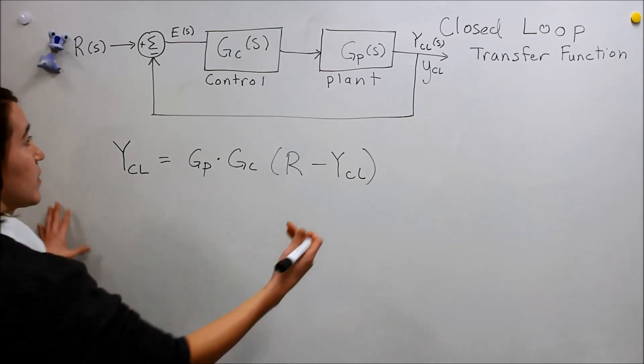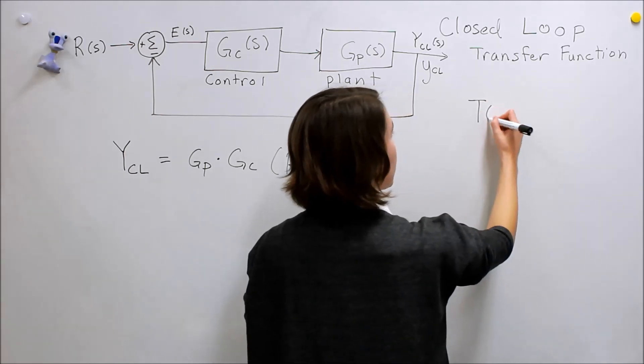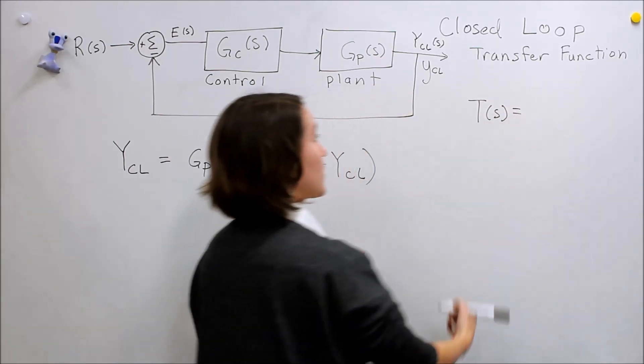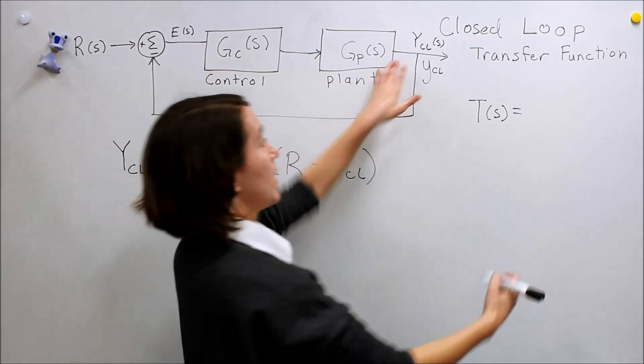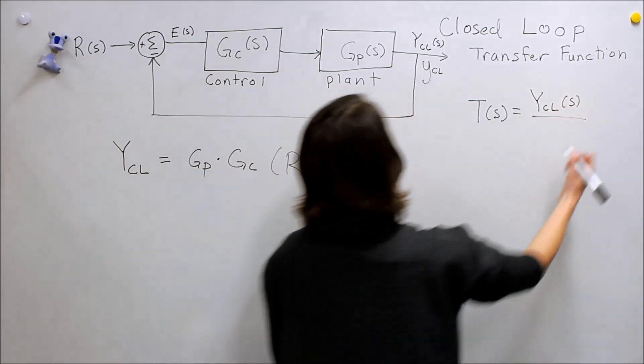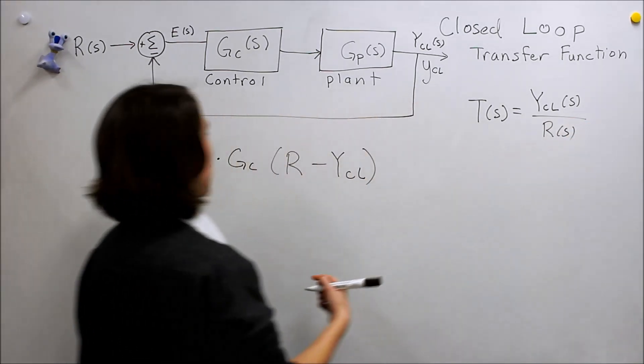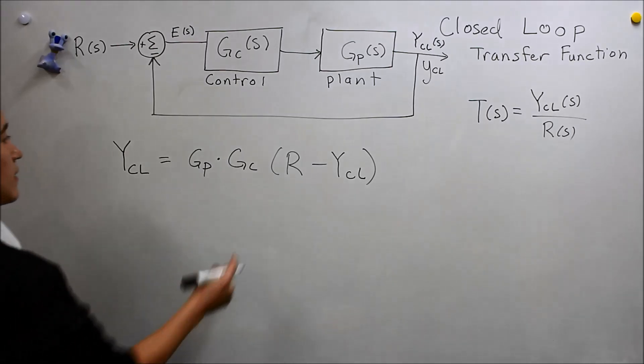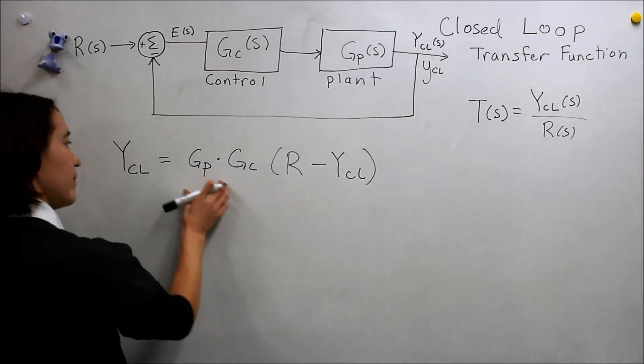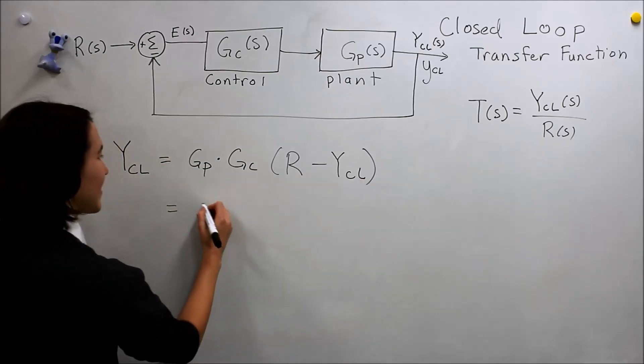So y_cl, the closed-loop output. And what we want to get - remember, we would like to get, we are going to call it T. I think the books and a few other places use that. So T is going to be equal to, what we want is the closed-loop over the reference. Let's do that. We can move that over, so expand that.